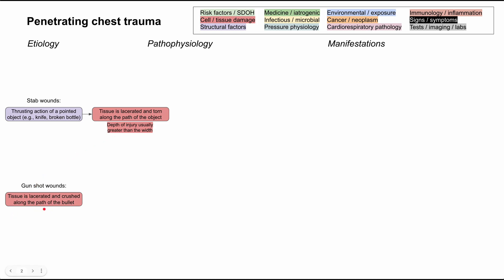Gunshot wounds involve a very fast missile that goes through the body, and the tissue is lacerated and crushed along the path of the bullet. The severity of the injury is related to the kinetic energy of the bullet — one half mv squared — where m is the mass (the weight of the bullet) and v is the velocity (the speed of the bullet). Those determine how much damage occurs.